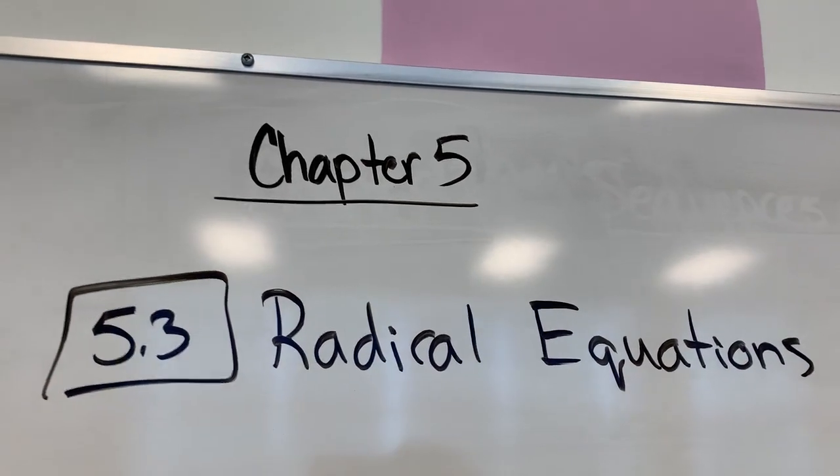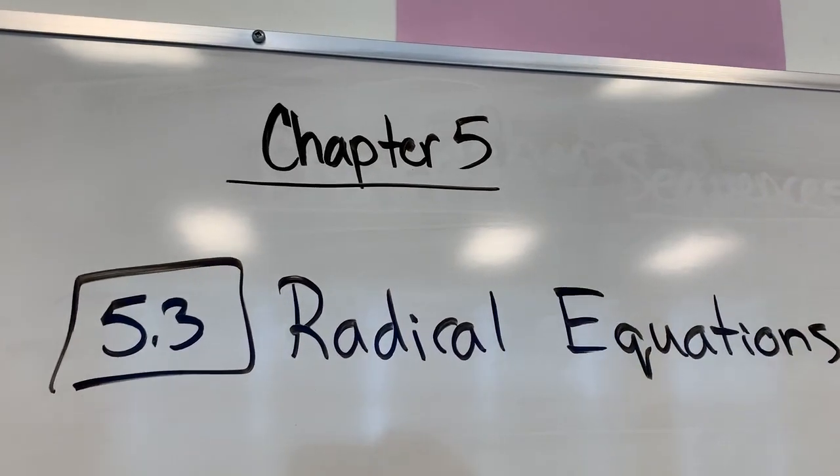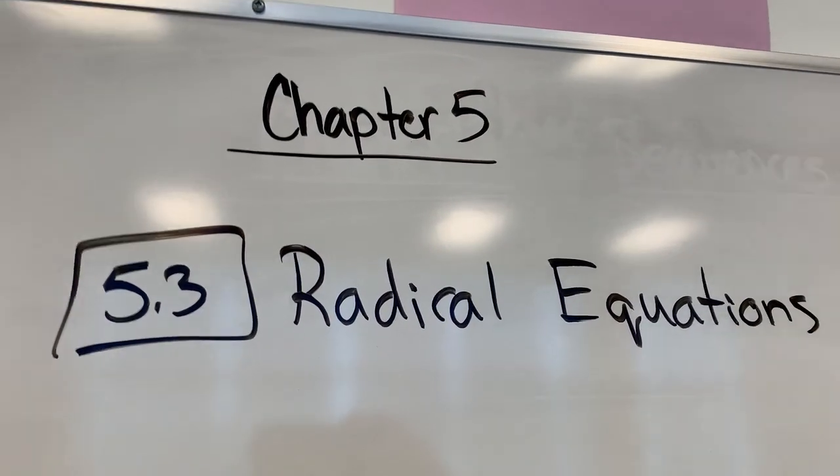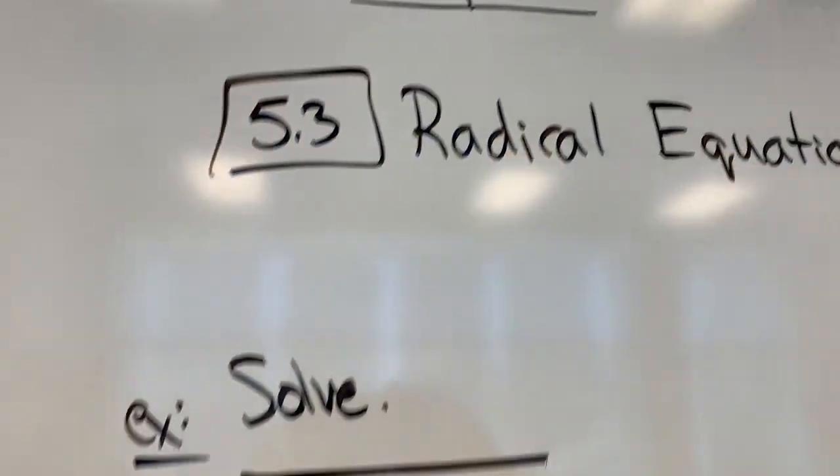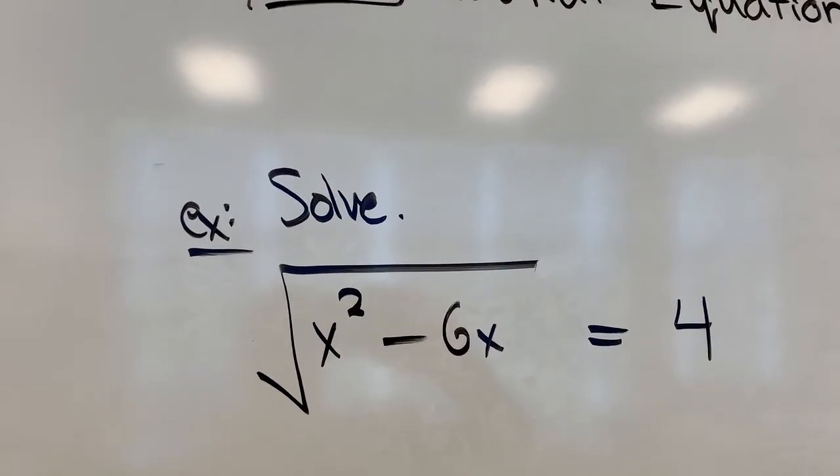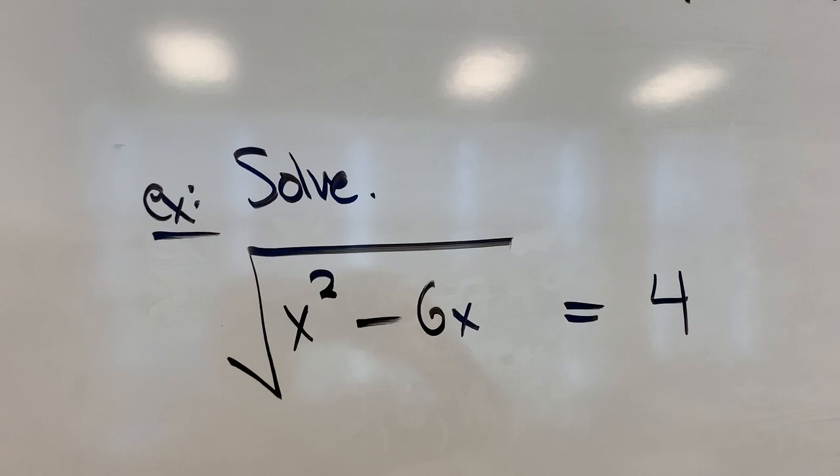All right, Math 20s. This example comes out of Chapter 5, and it's Section 5.3, Solving Radical Equations. A section a lot of students have some trouble with. So the example I'm going to do is solving this equation right here. The square root of x squared minus 6x is equal to 4.